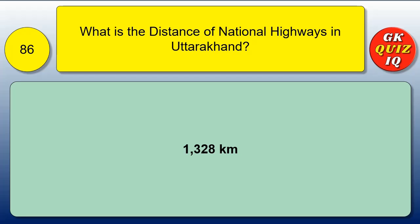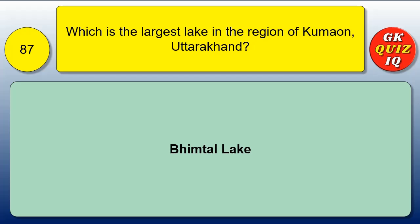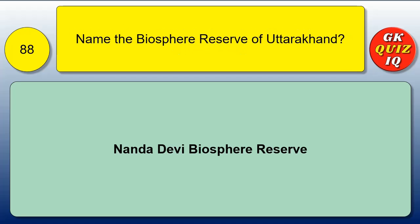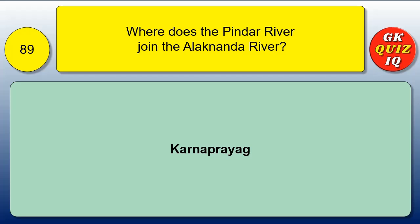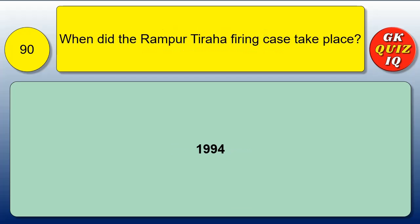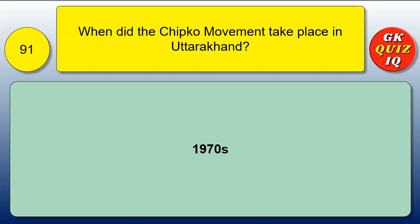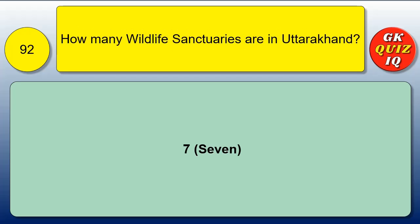What is the distance of national highways in Uttarakhand? 1,328 km. Which is the largest lake in the Kumaon region of Uttarakhand? Bhimtal Lake. Name the Biosphere Reserve of Uttarakhand. Nanda Devi Biosphere Reserve. Where does the Pindar River join the Alakananda River? Karnaprayag. When did the Rampur Tiraha firing case take place? 1994. When did the Chipko movement take place in Uttarakhand? 1970s. How many wildlife sanctuaries are in Uttarakhand? 7.